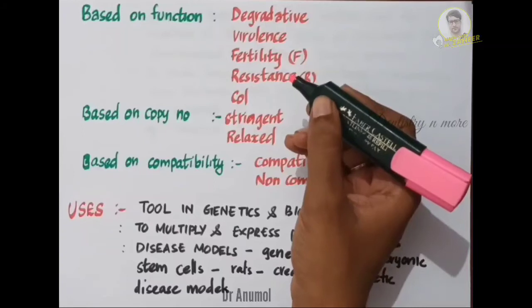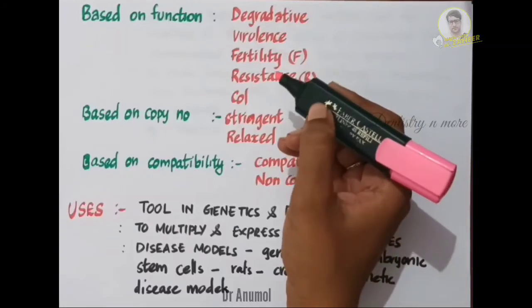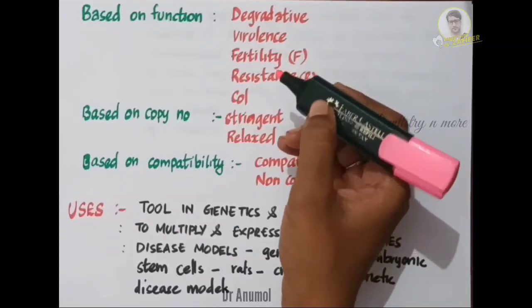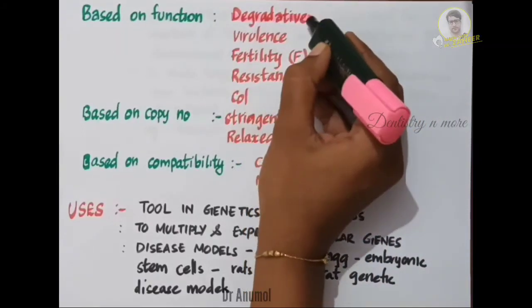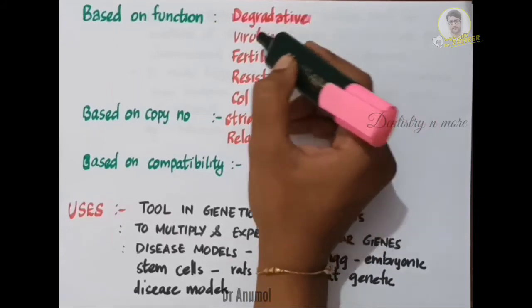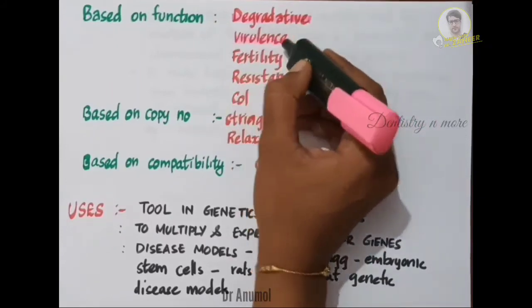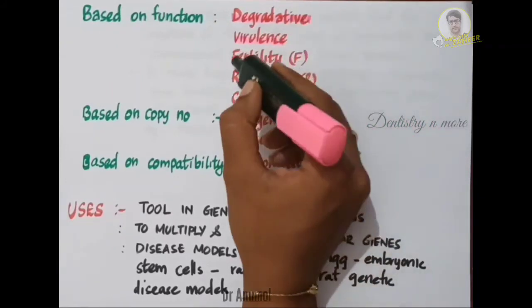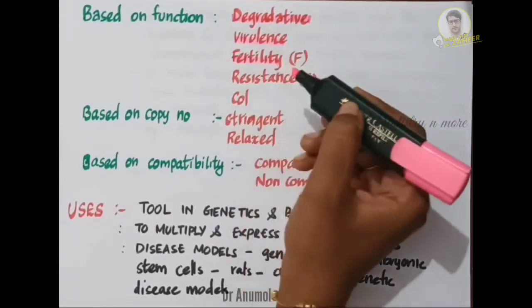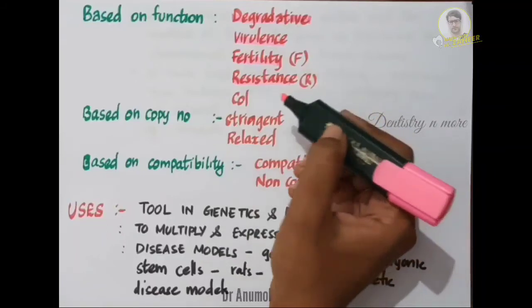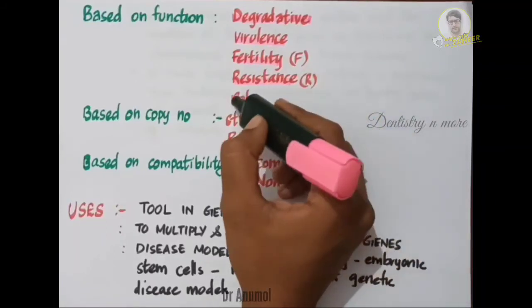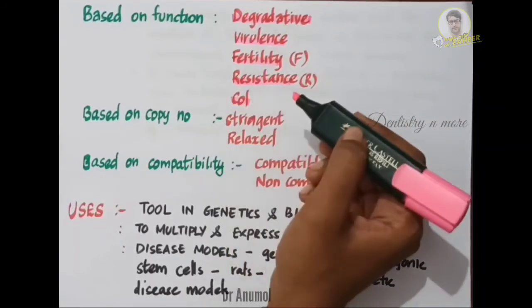The next classification is based on function. They are classified into degradative plasmids, virulence plasmids, fertility or F plasmids, resistance or R plasmids, and col plasmids.